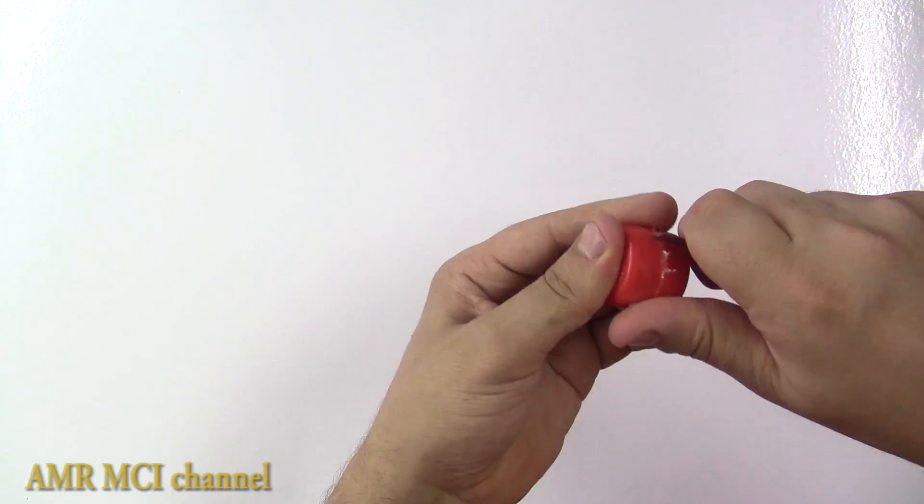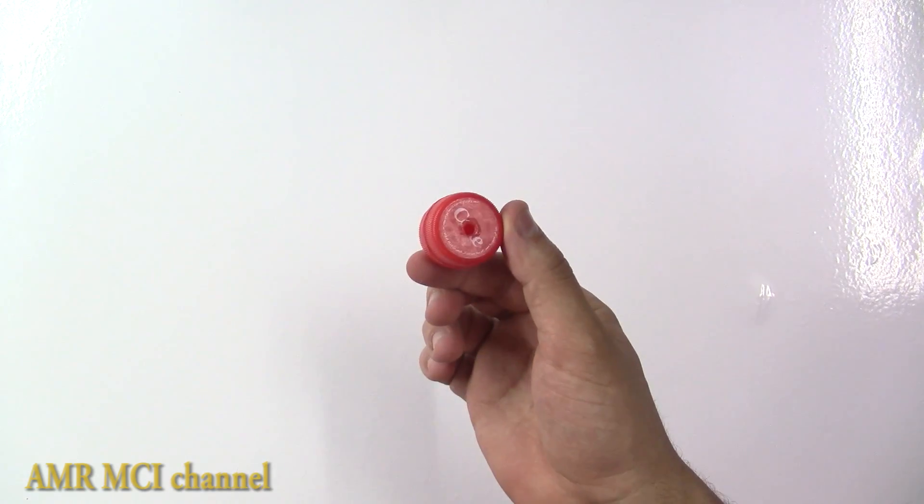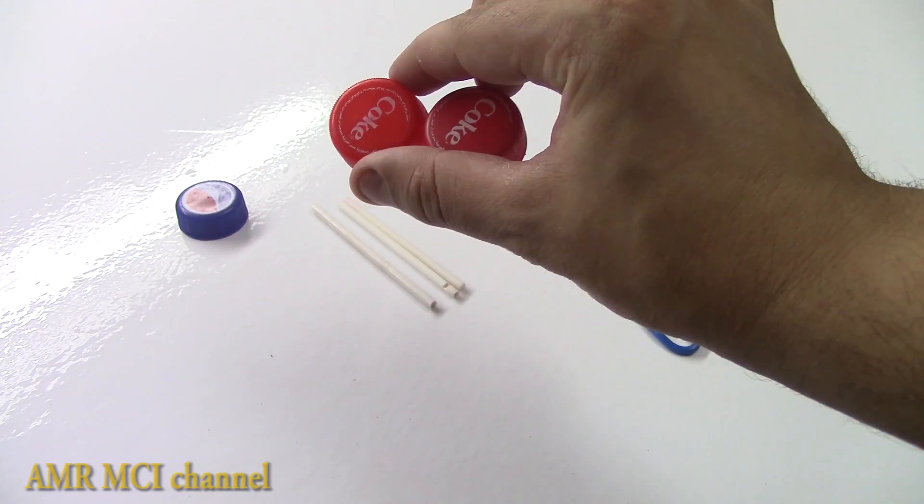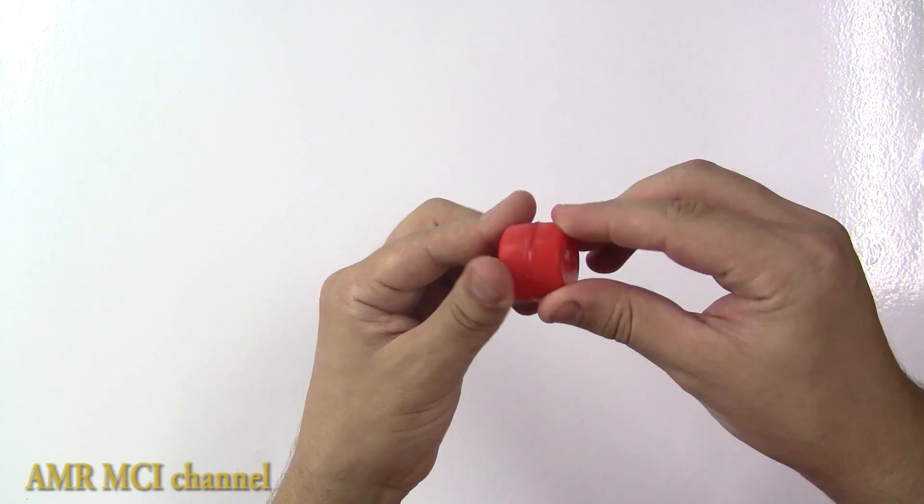Take another two caps and repeat the same steps you did for the first two caps until you end up with two wheels like these.